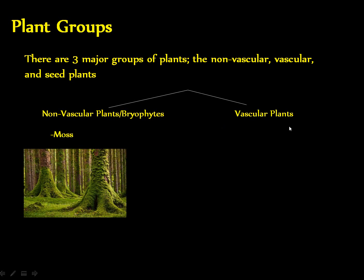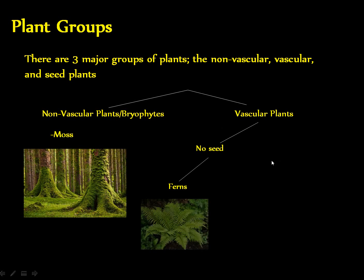Next we have the vascular plants. Vascular plants are then divided based on whether or not they have seeds. When they have no seeds, they are what we can call ferns. Ferns are the representative group for the seedless vascular plants, much in the same way moss are the model group for the bryophytes.